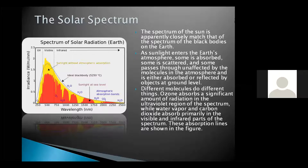Different molecules do different things. Ozone absorbs a significant amount of radiation in the ultraviolet region of the spectrum, while water vapor and carbon dioxide absorb primarily in the visible and infrared parts of the spectrum. These absorption lines are shown in the figure.